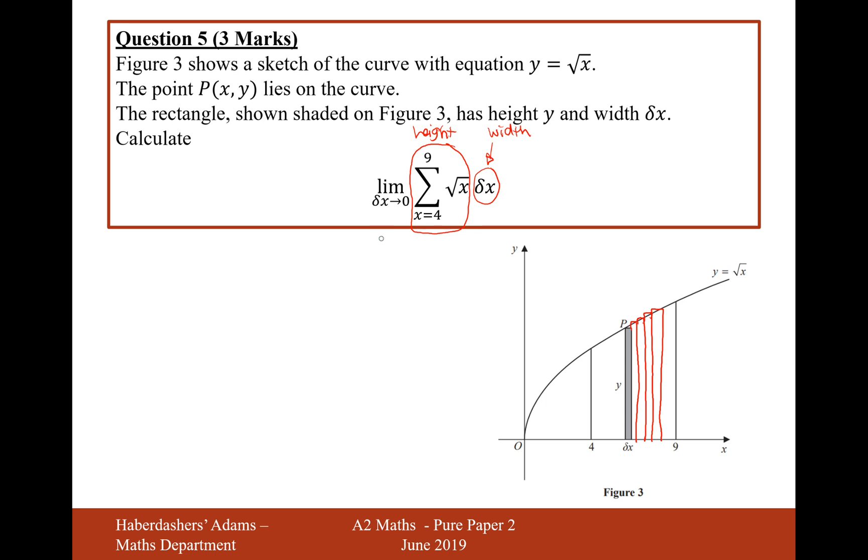And what the limit bit here is saying is increasingly make those rectangles thinner and thinner. And what will happen is as those rectangles get made thinner, that's going to approximate to the actual curve underneath the graph.